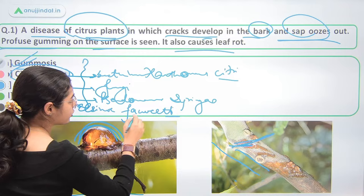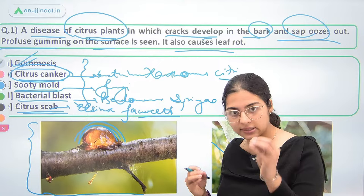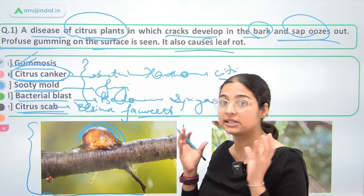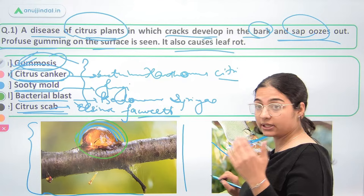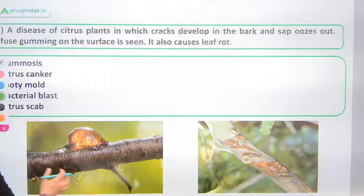Let us know the causal organisms. The best way to remember diseases in entomology or pathology is through pictures. For gummosis, it is directly clear from the name — there will be formation of gum, a sticky substance. Keep that photograph in mind so you can remember the disease.